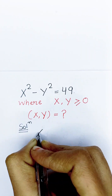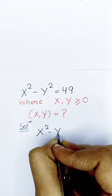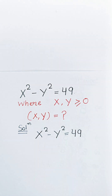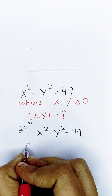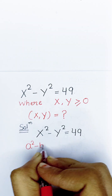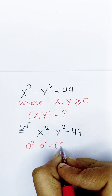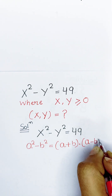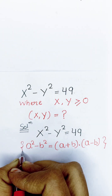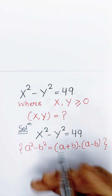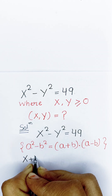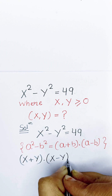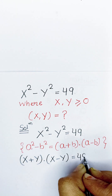The given problem is x squared minus y squared is equal to 49. Here we are able to use the algebraic identity: a squared minus b squared is equal to (a plus b) into (a minus b). So we will use this algebraic identity here. It will now become (x plus y) into (x minus y) is equal to 49.